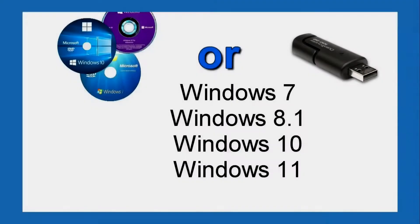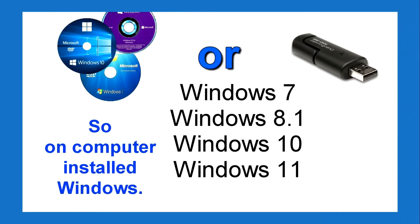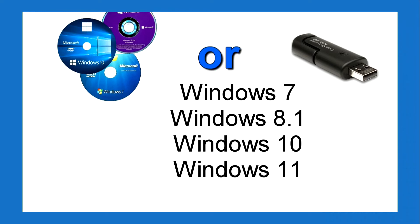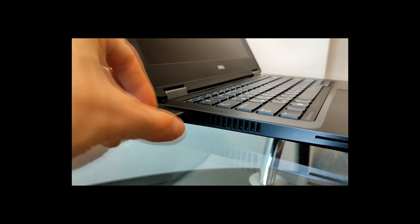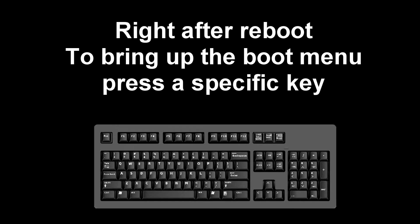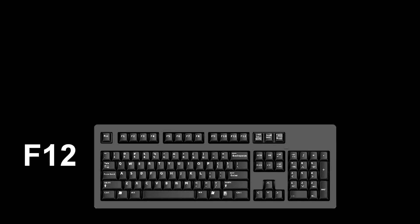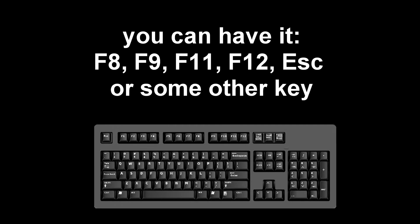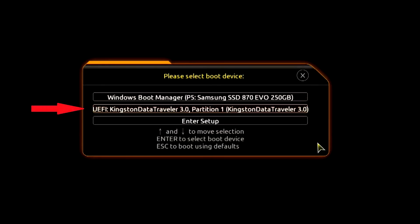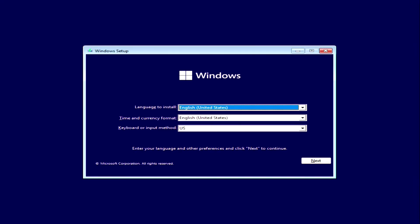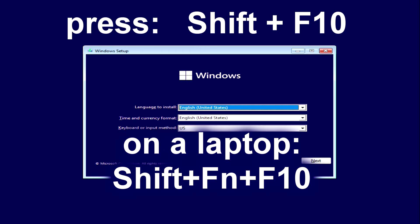Method number two: if your system asks for a password, you need to connect a Windows 7, 8, 10, or 11 installation USB flash drive or DVD to your computer. Any edition of Windows will work. Restart your computer and immediately press a key to bring up the boot menu — this could be F8, F9, F11, F12, or another key depending on your computer. Select the installation USB or DVD from the boot menu, press Enter. When the Windows install menu opens, press Shift and F10 at the same time to open the command prompt.